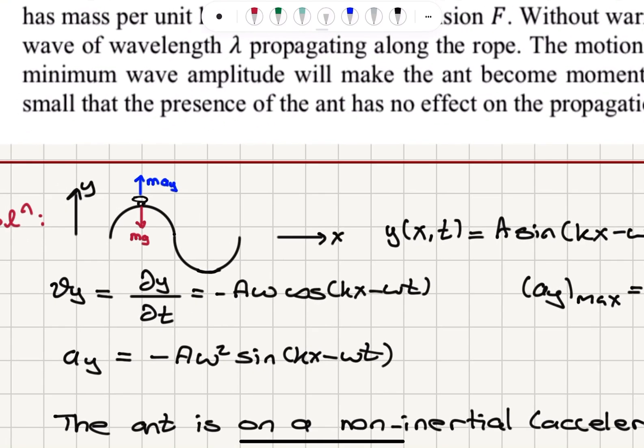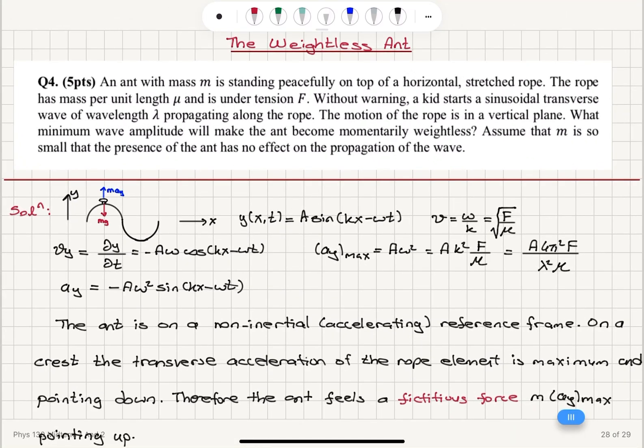So we have the ant standing on this transverse sinusoidal wave. It has a weight mg and because this string element is performing uniform circular motion as the wave propagates, it's on an accelerated reference frame feeling a fictitious force m times ay pointing in the opposite direction as the acceleration of the string element.